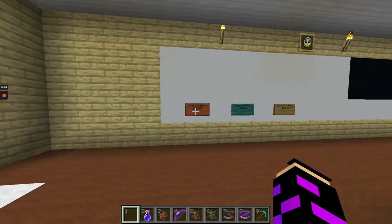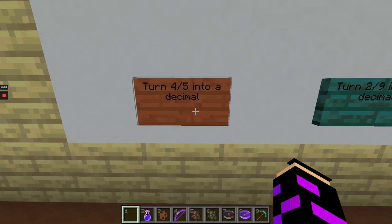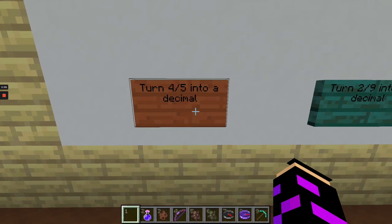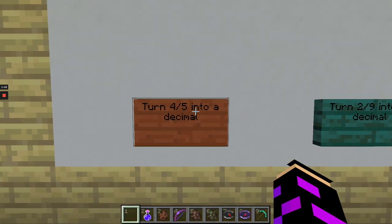Let's look at the lesson for today. Look, there's some signs. Let's see what it says. Turn four-fifths into a decimal. We know how to do that. Let's do that.